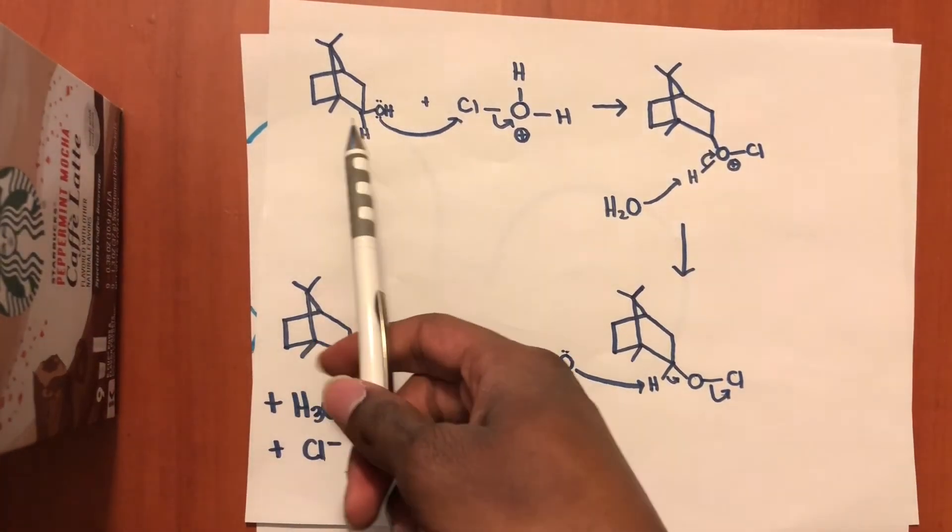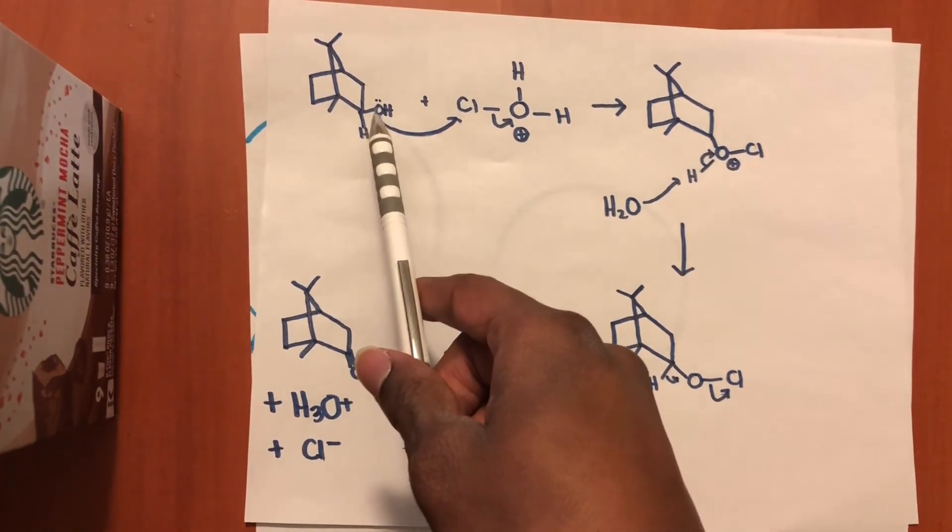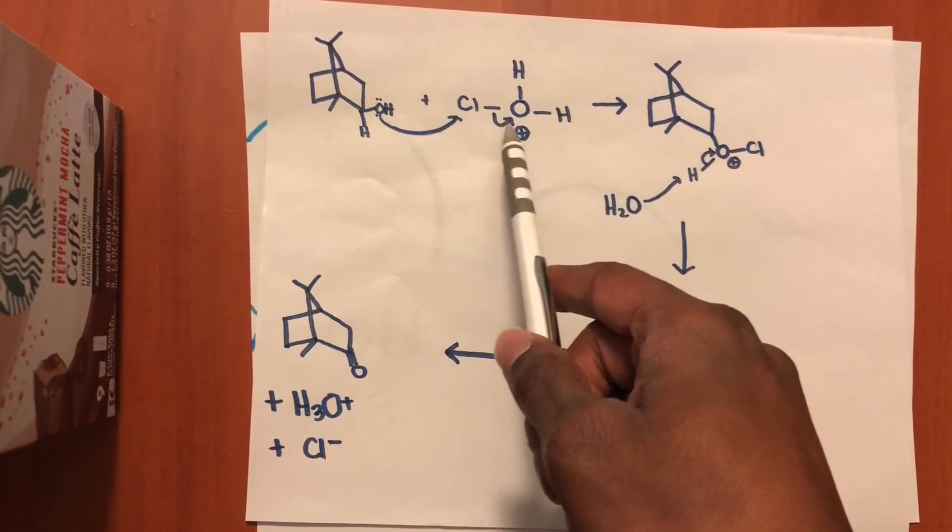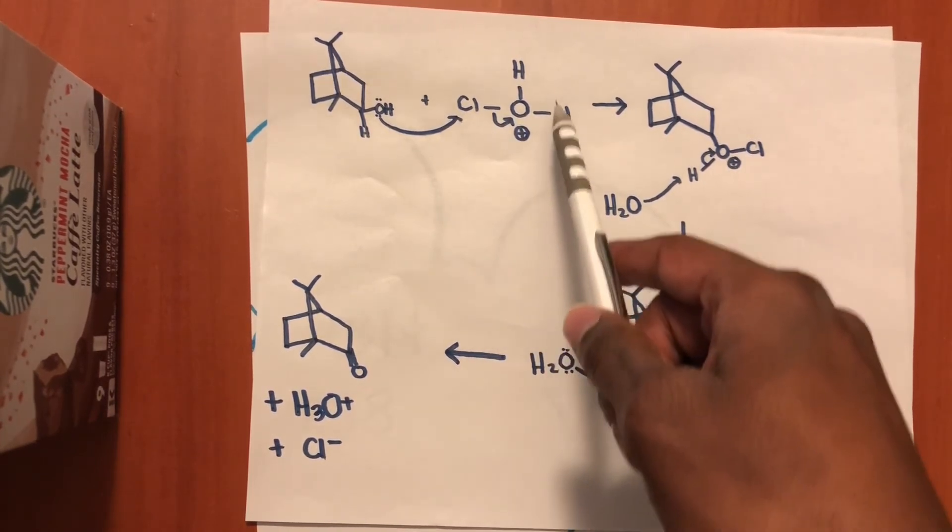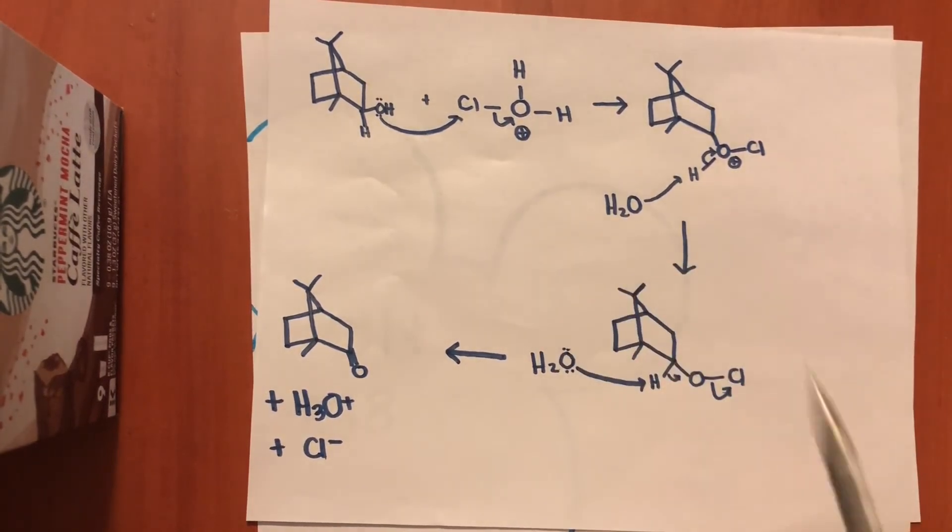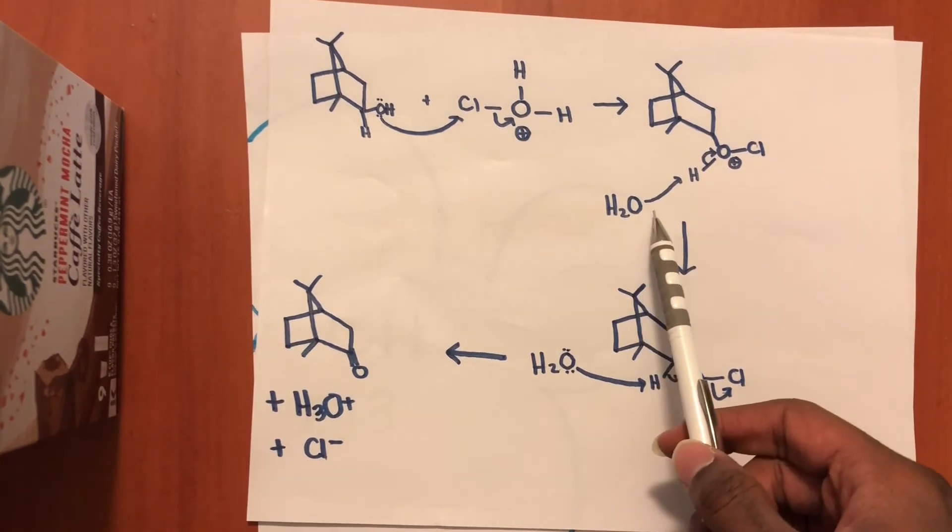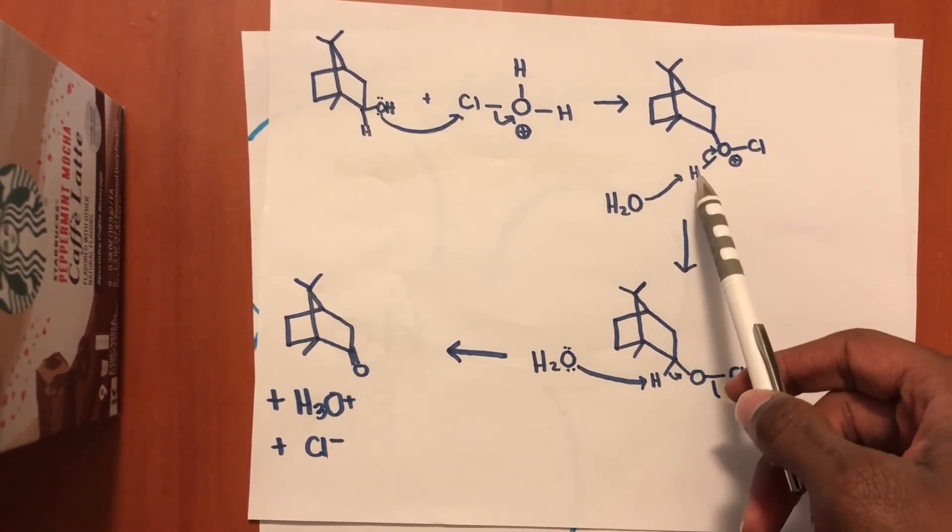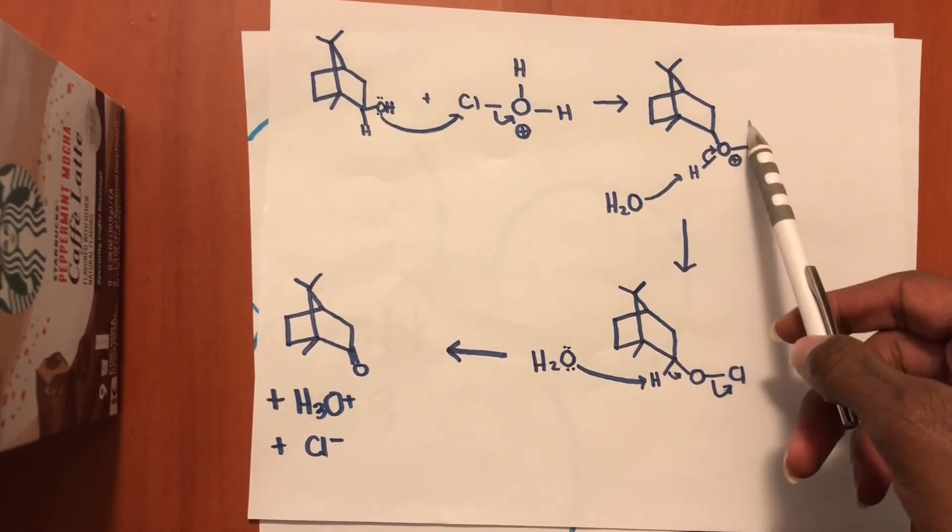Here we have isoborneol, the oxygen attacking this chlorine, and then the bond in between the chlorine and oxygen. The electrons are going to go back onto this oxygen. That forms water. Now this water will be attacking, well the oxygen in the water rather, will be attacking the hydrogen and the electrons will fall back onto this oxygen.